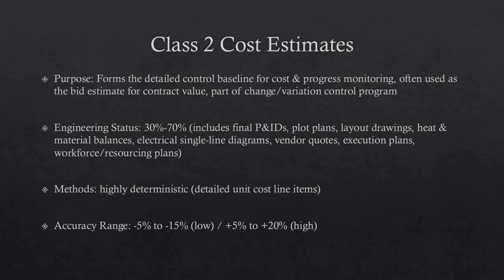Class 2 estimates are generally prepared to form a detailed control baseline against which all project work in terms of cost and progress is controlled. For contractors, this class of estimate is often used as the bid estimate to establish contract value. Typically, engineering is from 30% to 70% complete and would include at a minimum: process flow diagrams, utility flow diagrams, piping and instrument diagrams, heat and material balances, final plot plan, final layout drawings, complete engineered process and utility equipment lists, single line diagrams for electrical, electrical equipment and motor schedules, vendor quotations, detailed project execution plans, and resourcing and workforce plans.